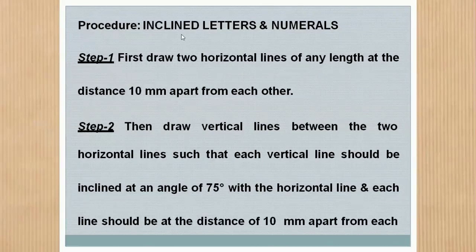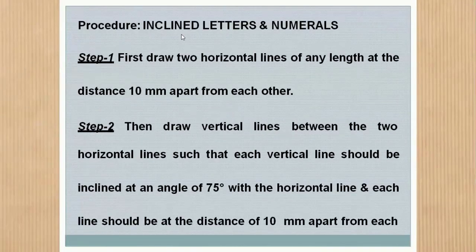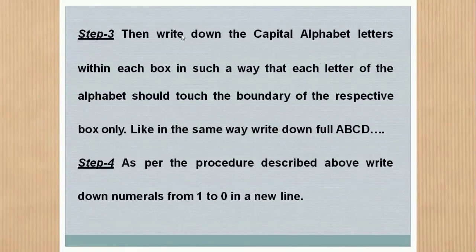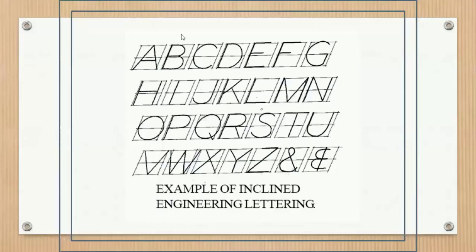The width of the majority of letters is equal to the height. For inclined lettering: Step one — draw two horizontal lines at a distance of 10 mm apart. Step two — draw vertical lines between the horizontal lines such that each vertical line is inclined at 75 degrees with the horizontal, with each line 10 mm apart. Step three — write capital alphabet letters within each box touching its boundary only, and write full ABCD. Step four — write the numbers from 1 to 0 in a new line.